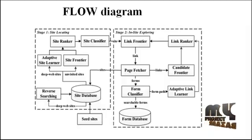The form classifier continuously checks the href tags and gets the page fetcher algorithm. The page fetcher gets the link ranker algorithm and the candidate frontier algorithm, so the adaptive link liner automatically puts values for the URLs. The URL is classified using site locating and site exploring — this is called the two-stage smart crawler. In the first stage, the URL is fetched, and in the second stage, the whole URL documentation is fetched.